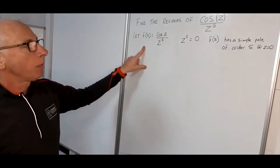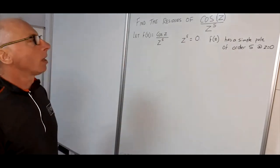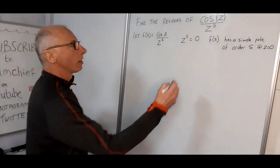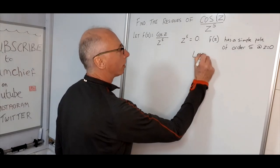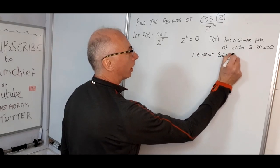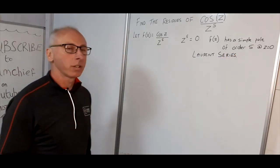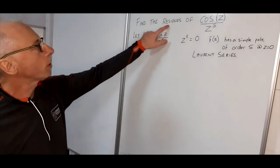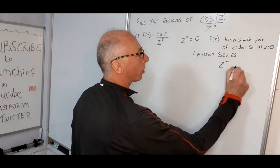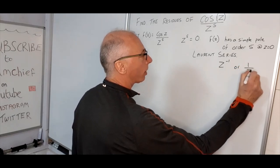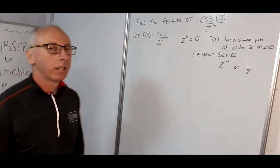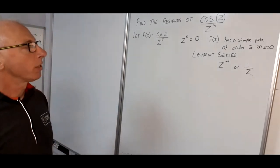So how are we going to find the residues of this function? One way we can use is the Laurent series. The term in the Laurent series that we are interested in for finding residues is the z to the minus 1, or 1 over z, term. The Laurent series is very similar to the Taylor series.